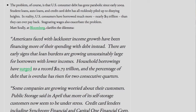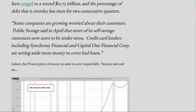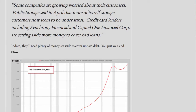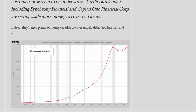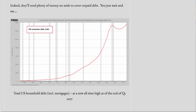Matt Scully at Bloomberg clarifies the dilemma. Quote: 'Americans faced with lackluster income growth have been financing more of their spending with debt instead. There are early signs that loan burdens are growing unsustainably large for borrowers with lower incomes. Household borrowings have surged to a record $12.73 trillion, and the percentage of debt that is overdue has risen for two consecutive quarters. Some companies are growing worried about their customers.' Credit card lenders, including Synchrony Financial and Capital One Financial Corp., are setting aside more money to cover bad loans. Indeed, they'll need plenty of money set aside to cover unpaid debt.